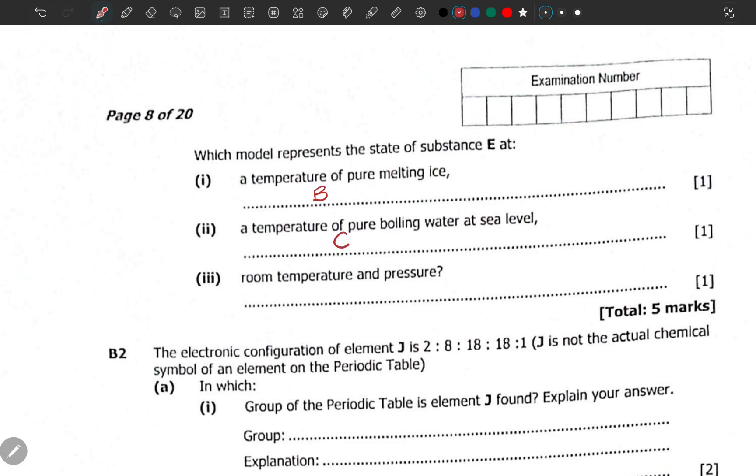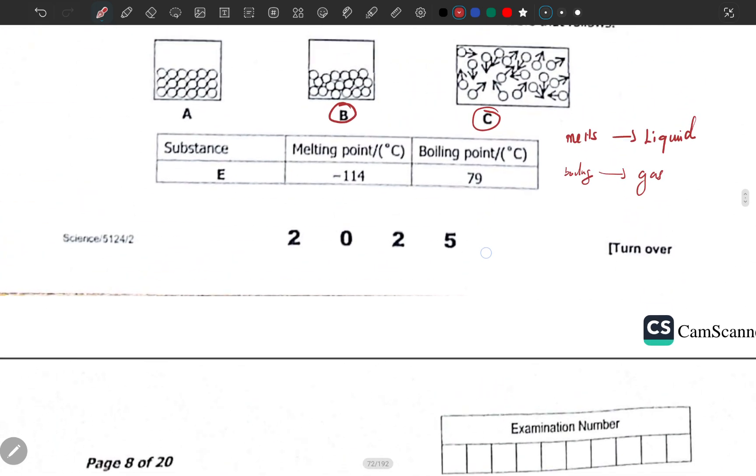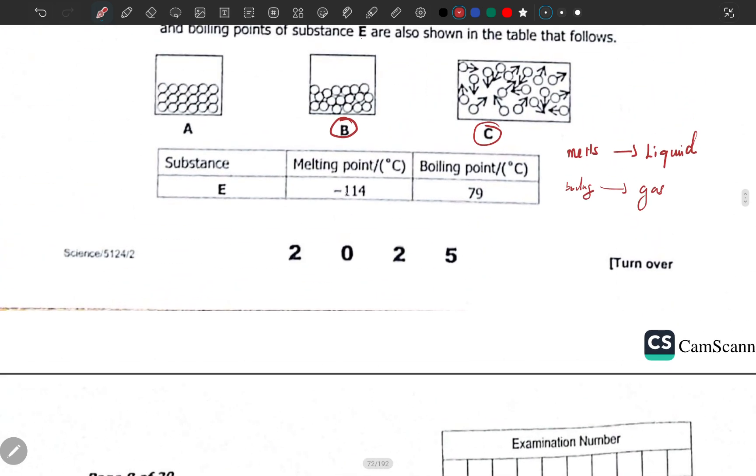At room temperature and pressure, talking about substance E - look at the melting point, it's negative 114, and the boiling point is about 79. What is this - is it a liquid, a gas, or a solid? Looking at it, since it has got a very low melting point, it cannot be a solid and it cannot be a gas.